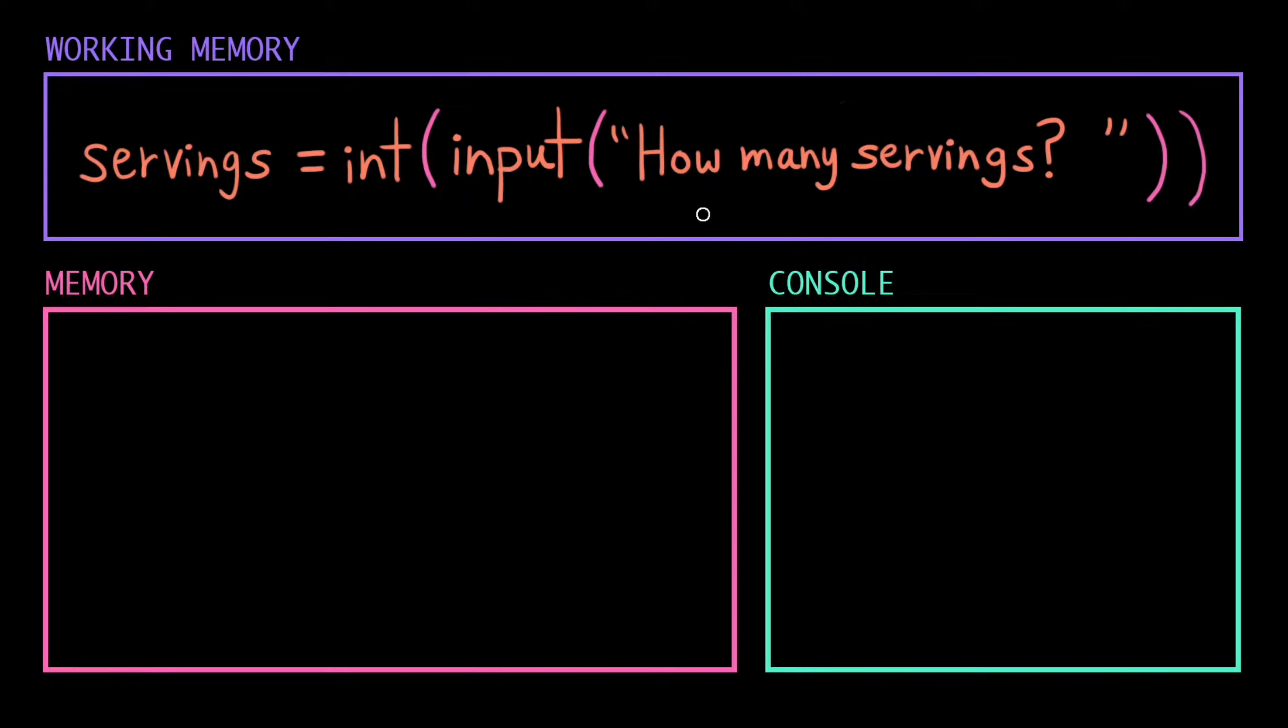Here, in the innermost parentheses, we have the string 'How many servings'. This is already a single value, so it doesn't need simplifying. The computer is going to peek outside of those parentheses and ask, what did you want me to do with this value? It sees the input function. The computer takes that value, displays it in the console, pops up a prompt, and then waits for the user to enter something.